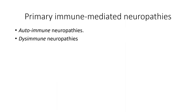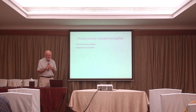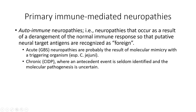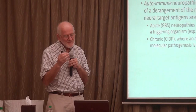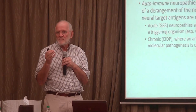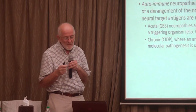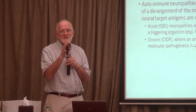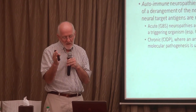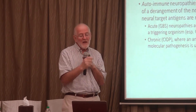Moving back to the primary immune-mediated neuropathies — the autoimmune or what I call disimmune disorders. The autoimmune disorders are those that result from a normal immune response becoming confused and attacking a putative antigen in the nerve. The classic example would be GBS, and we know that at least in some cases this is a process of molecular mimicry. For Campylobacter jejuni, there is cross-recognition of a nodal protein in patients with post-Campylobacter GBS that interacts with a component of the Campylobacter jejuni coat.